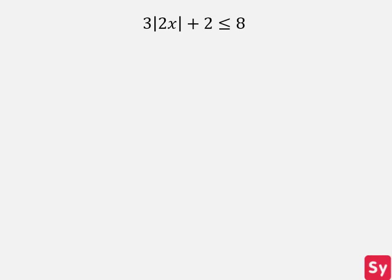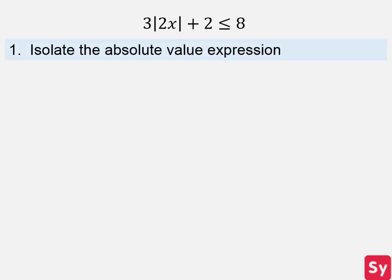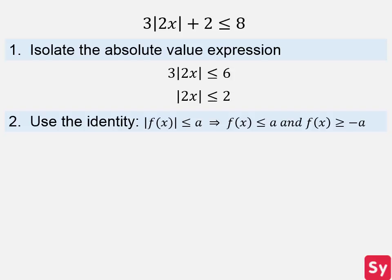Last example: we have 3 times the absolute value of 2x plus 2 is less than or equal to 8. First, we isolate the absolute value expression. We first subtract 2 from both sides, then we divide each side by 3, so we have the absolute value of 2x is less than or equal to 2. Next, we use this identity: we have 2x is less than or equal to 2, and 2x is greater than or equal to negative 2.